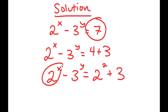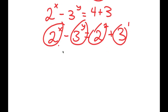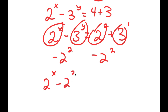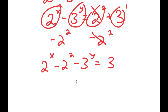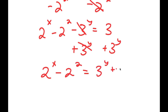Notice how I have something in the form 2 to the power of number minus 3 to the power of number is equal to 2 to the power of number, and I also have 3 to the power of 1. From here, I'm going to group the powers of 2 together and group the powers of 3 together. I'll subtract 2 squared on both sides, giving me 2 to the power of x minus 2 squared minus 3 to the power of y is equal to 3. Then I'm going to add 3 to the power of y on both sides, so I get 2 to the power of x minus 2 squared is equal to 3 to the power of y plus 3.